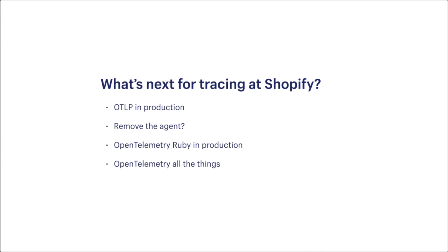Now that OTLP has settled down a bit, we're working to use it in production. We're hoping for large efficiency gains from a pure OTLP pipeline. If we get them, that might save the agent, but the operational overhead of maintaining the agent daemon sets means we'll probably remove them. Our strategy there is to use Envoy for link aggregation in the client clusters, and for client instrumentation to collect metadata and populate the resource tags themselves. Once we migrate all our services to export in OTLP, we can start deleting more custom code and eventually consider building directly from the upstream repo.